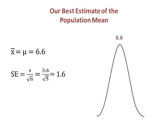The first step in building this range is calculating the standard error, which we have already learned is the standard deviation divided by the square root of n. In my example, the standard error is 1.6.